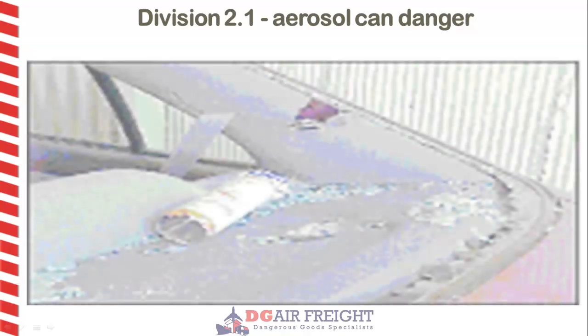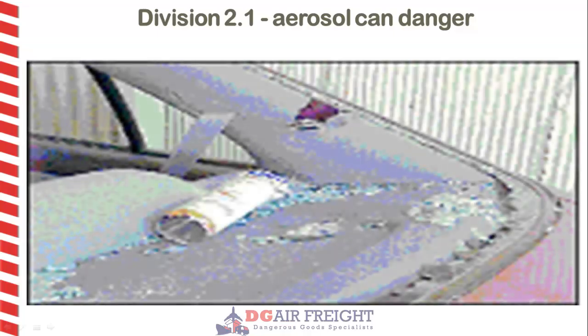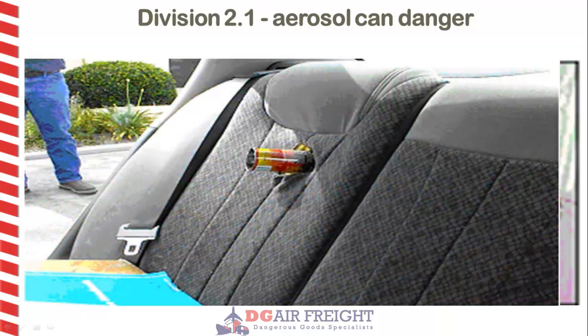Here is an example of damage that can be caused by an aerosol. The temperature within the vehicle was sufficient to cause the can to rupture and take out the back window, and in this case embed itself into the back seat. The Aerosol Association of Australia recommends extreme caution for users of aerosols in operating temperatures in excess of 45 degrees Celsius.